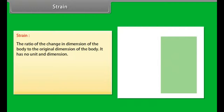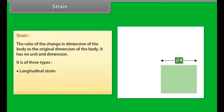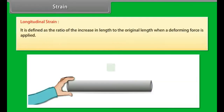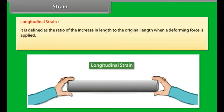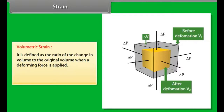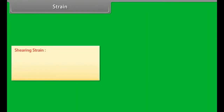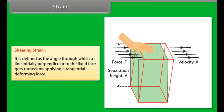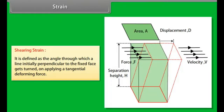Strain is defined as the ratio of the change in dimension of the body to the original dimension of the body. It has no unit or dimension. It is of three types: Longitudinal strain — the ratio of the increase in length (ΔL) to the original length (L); Volumetric strain — the ratio of the change in volume to the original volume, equal to −ΔV/V; and Shearing strain — the angle through which a line initially perpendicular to the fixed face gets turned on applying a tangential deforming force.